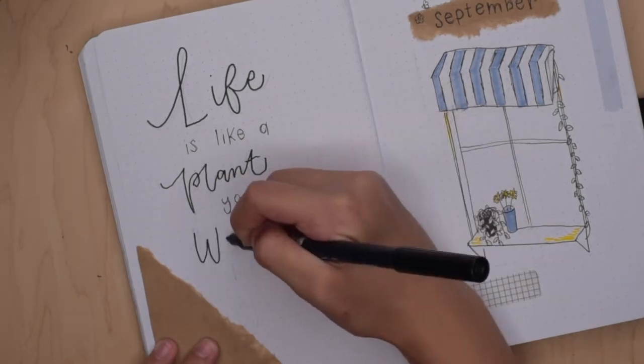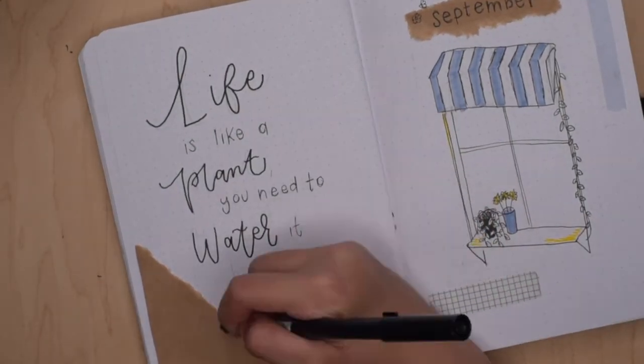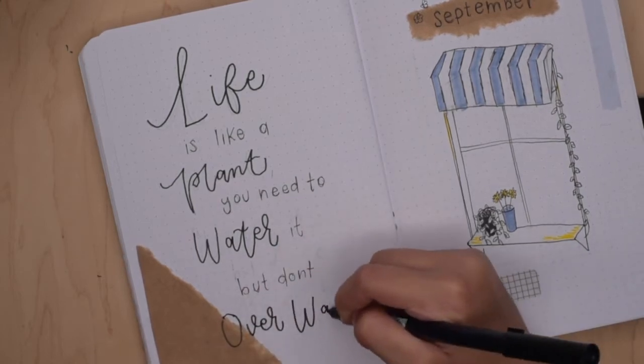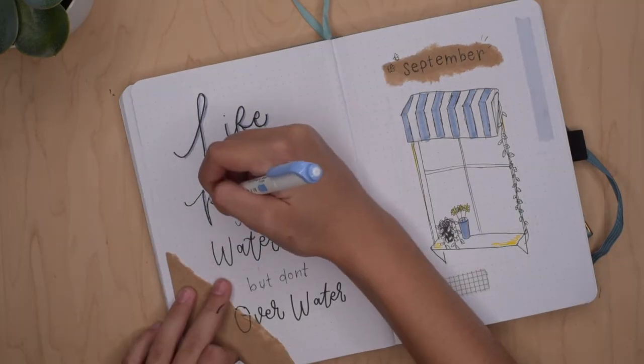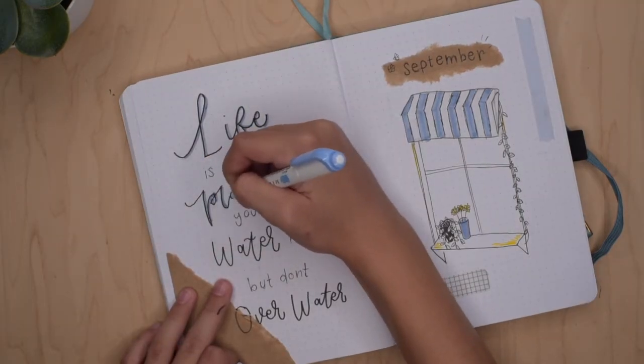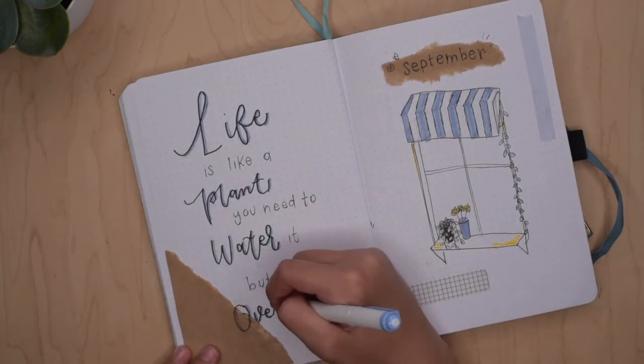I kind of just came up with this one, not sure if it already exists, but the quote is 'Life is like a plant, you need to water it but don't overwater,' which I think is relatable for me especially because I feel like in life you got to give yourself challenges and try new things.